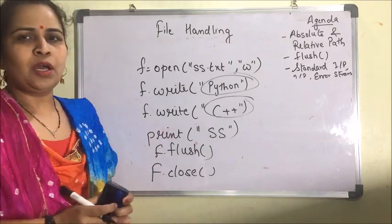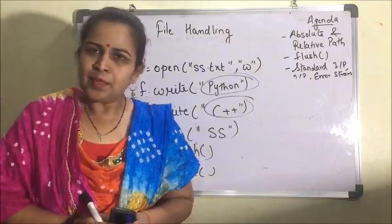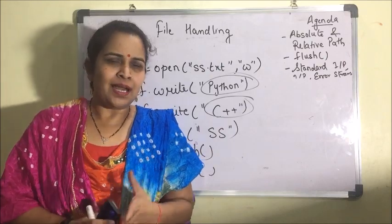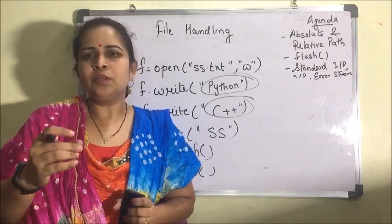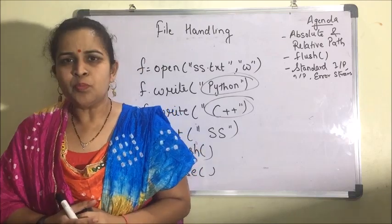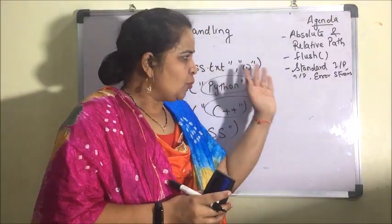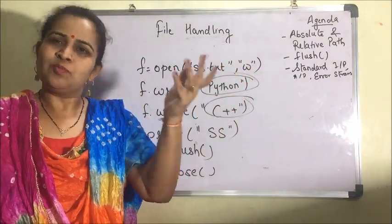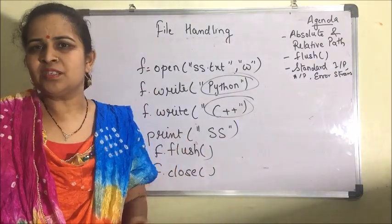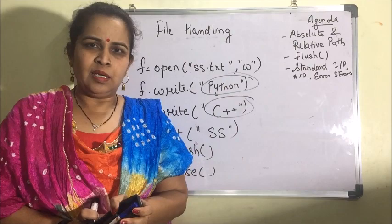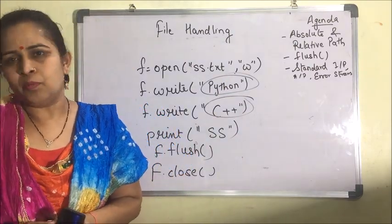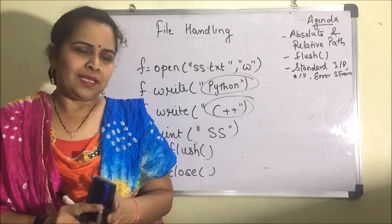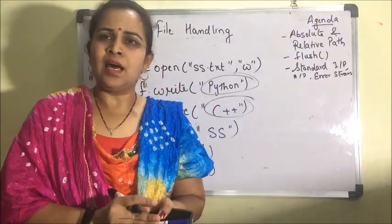Now we move to standard input, output, and error streams. The standard input device is the keyboard, and the standard output device is the monitor. Similarly, the standard error stream also displays on the monitor. These standard devices are implemented as files — input and output files — and the module used to handle them is the sys module.